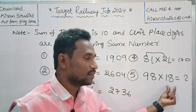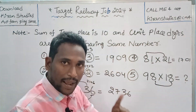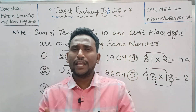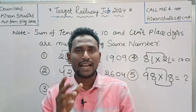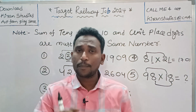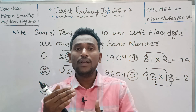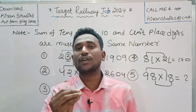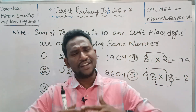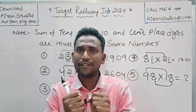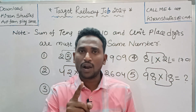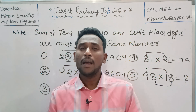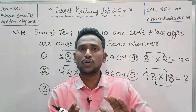The last question is 98 times 18. Unit digits are the same — both 8. And the tens place is 9 plus 1 equals 10, so the rule is satisfied. Please solve this as a comment. We have to fix these rules in our mind. We are preparing for competitive exams, and we have to practice a lot of logic to solve problems quickly.